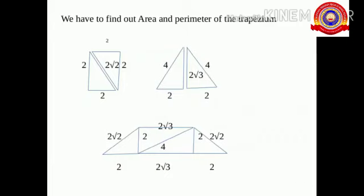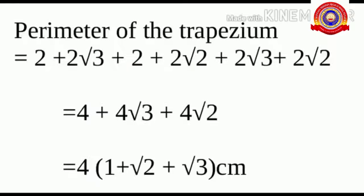So, the perimeter of the trapezium is equal to 2 plus 2 root 3 plus 2 plus 2 root 2 plus 2 root 2, which is equal to 4 plus 4 root 3 plus 4 root 2.